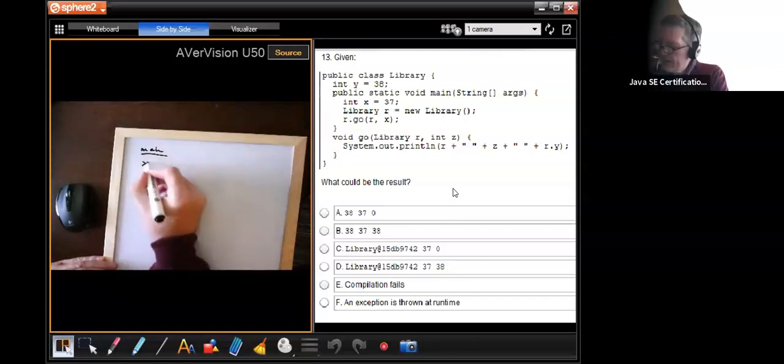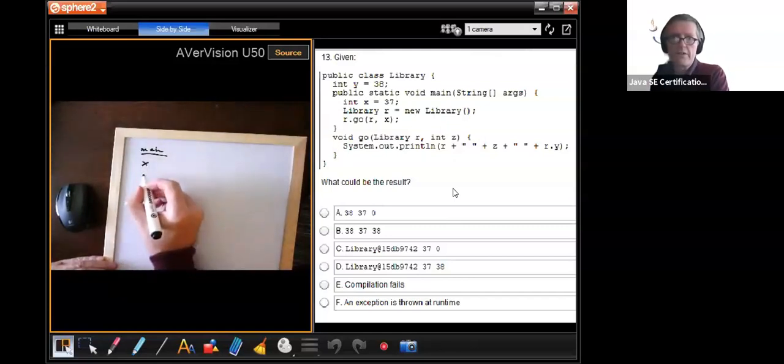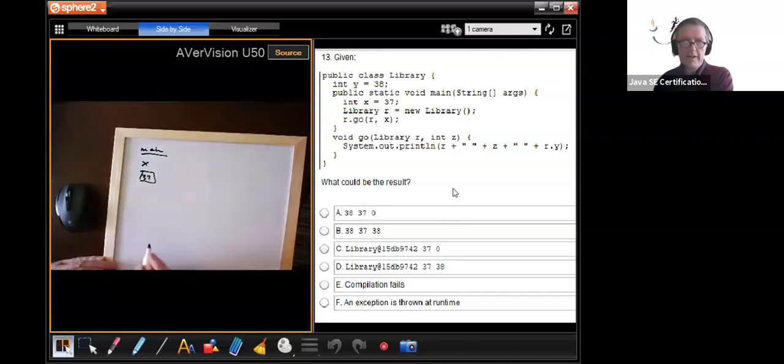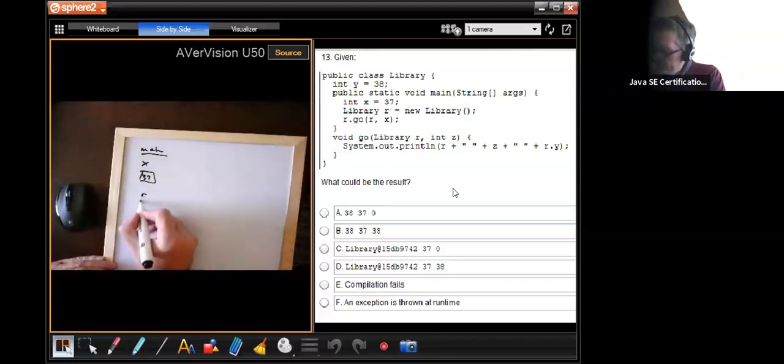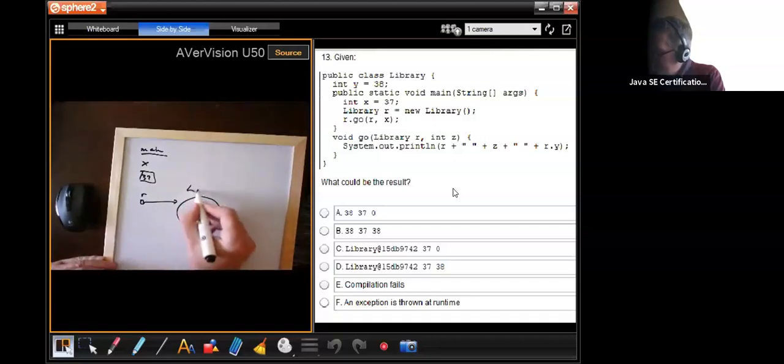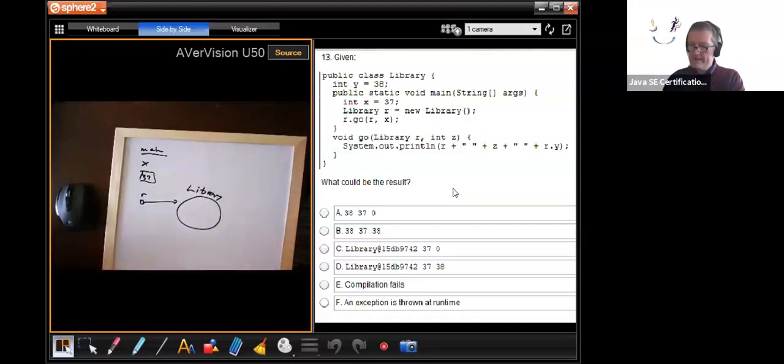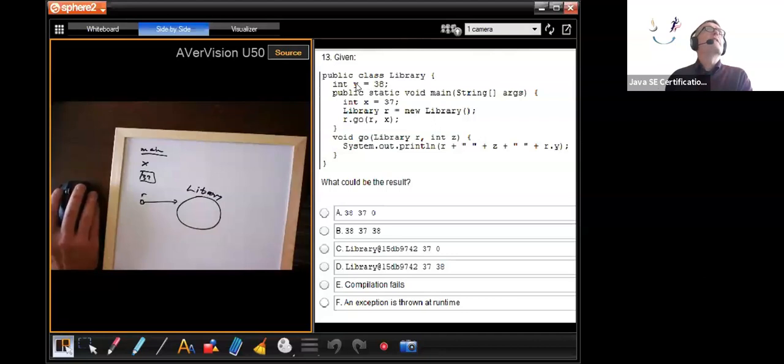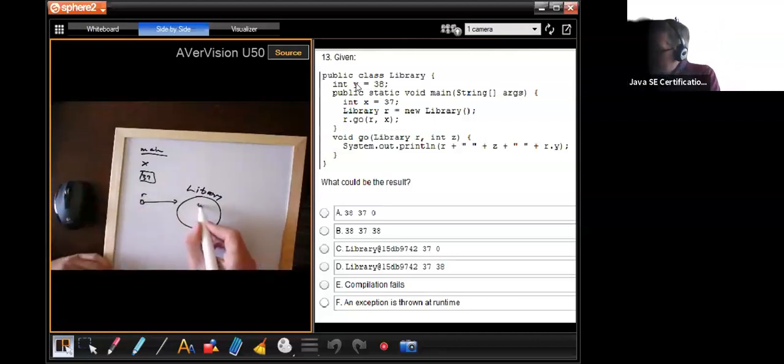We have a local variable x and x is set to 37, it's an int variable. And then we go and we call new Library with r, so r is a reference to a new Library object. And because of this line up here, it's going to set y to 38 in that place there, so y is set to 38.